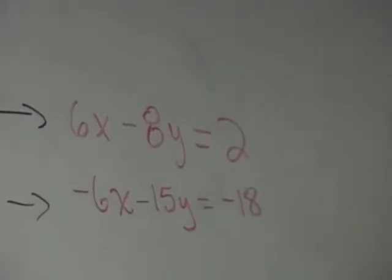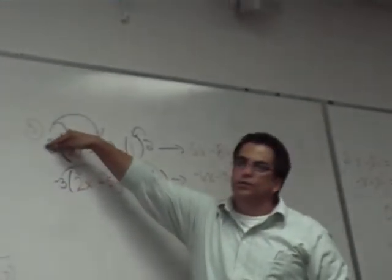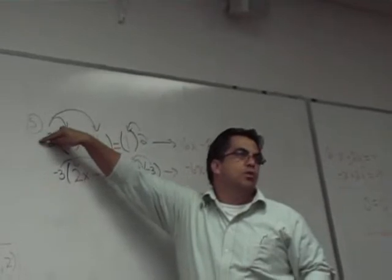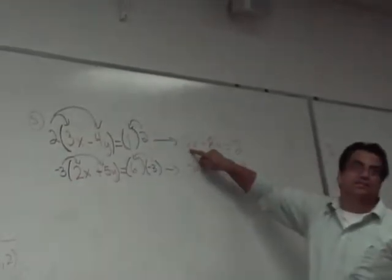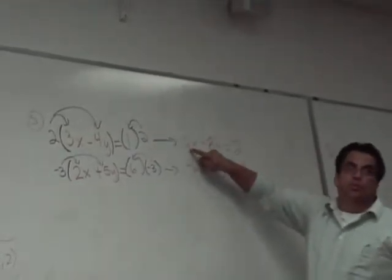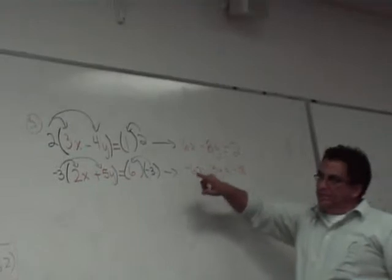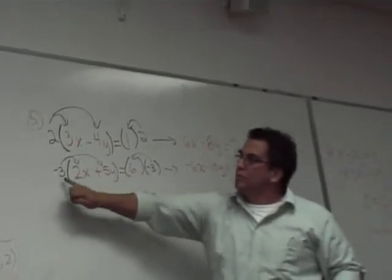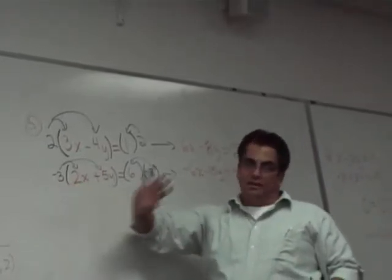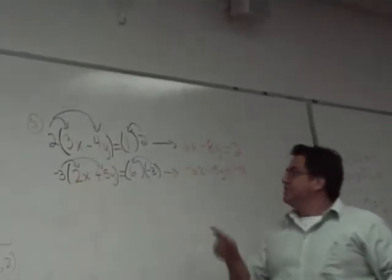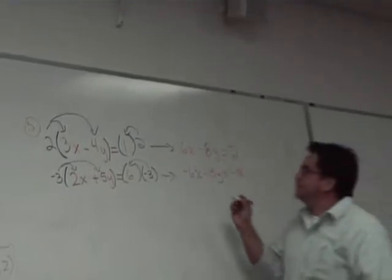The question you were asking, Talina, was: what if you multiply the top equation by negative 2? This would give negative 6x. We would then need the bottom to be a positive 6, so you multiply by a positive 3. The point is, these have to be opposite so they cancel.